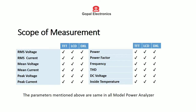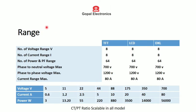In scope of measurement, the parameters mentioned in the table can be measured by all models. The range of all models is the same: there are 8 ranges of voltage, 8 ranges of current, and a total of 64 ranges of power and power factor. Phase-to-neutral maximum voltage is 700 volts, phase-to-phase maximum voltage is 1200 volts.